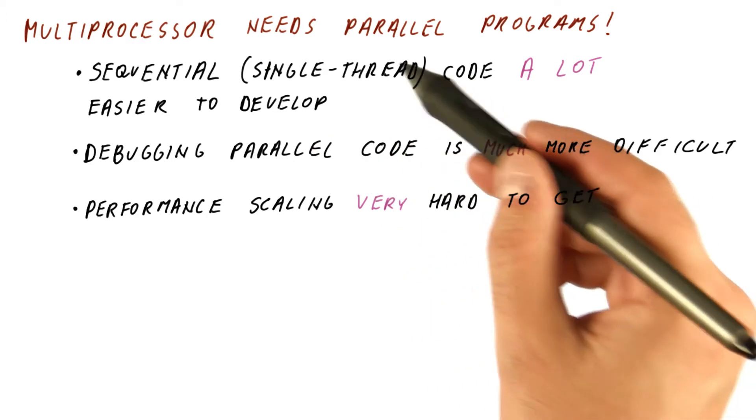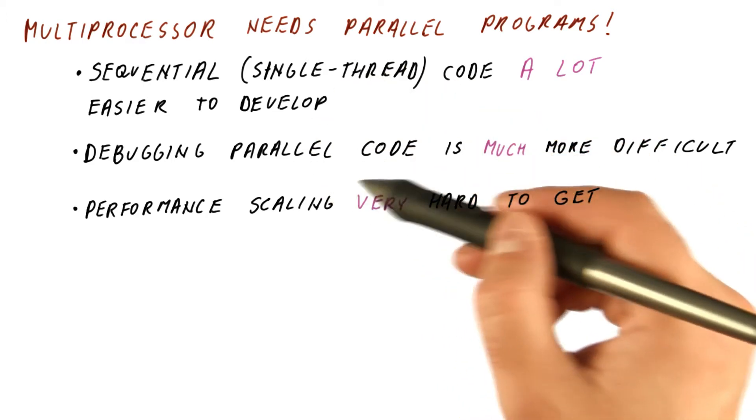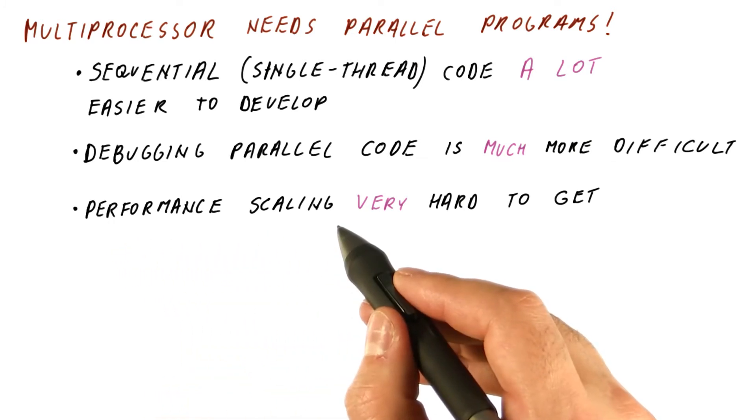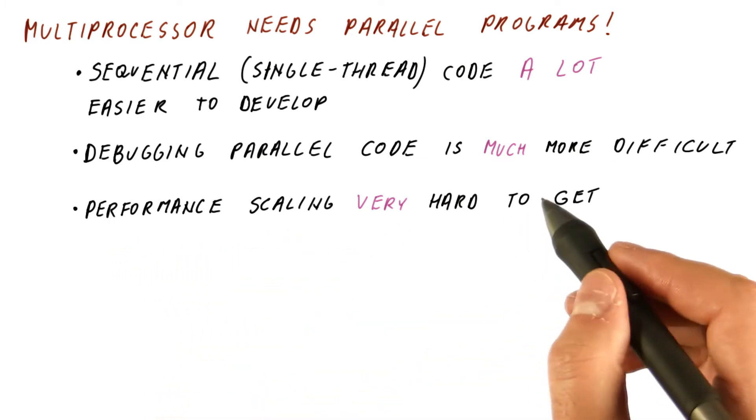Even if you have a program that works correctly and uses a lot of threads, chances are that it will still be very hard to get what is called performance scaling.